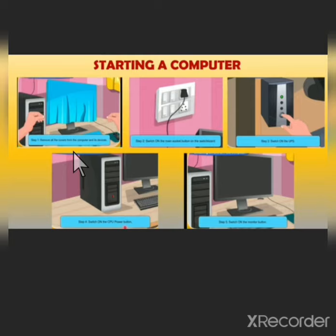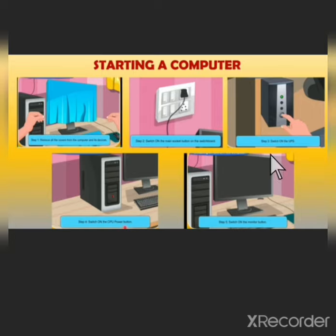Now we will see how to start a computer. Step 1: remove all the covers from the computer and its devices. Step 2: switch on the main socket button on the switchboard. Step 3: switch on the UPS. Step 4: switch on the CPU power button. Step 5: switch on the monitor. In a few seconds you will see the Windows loading screen appear on your monitor.